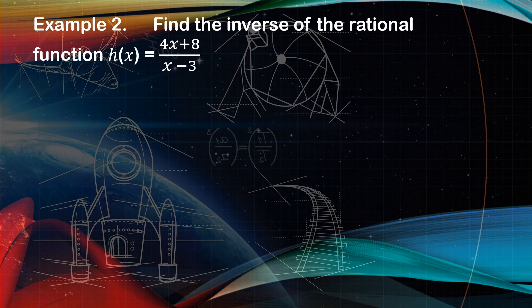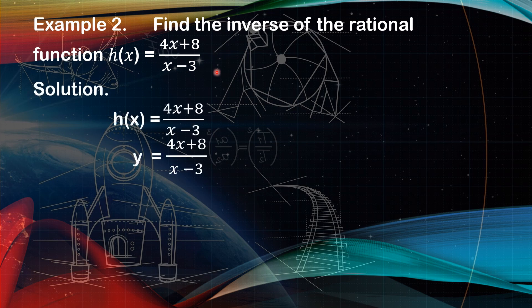Example number 2: find the inverse of the rational function h(x) equals 4x plus 8 over x minus 3. Our first step is to change h of x into y, then copy equals 4x plus 8 over x minus 3. The next step is to interchange x and y variables — y becomes x and x becomes y. Then the next step is to solve for y in terms of x.